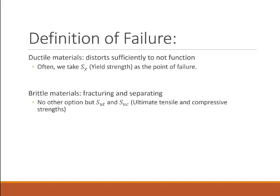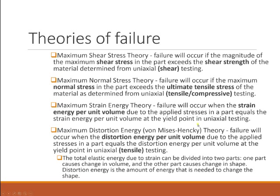There are lots of theories of failure that people have proposed over the years. I'm going to briefly look at four of them. The first one is the maximum shear stress theory: failure occurs when the shear stress exceeds the shear strength, and we determine the shear strength using uniaxial testing. The problem with this one is that it doesn't match the data. However, it is a conservative theory, meaning it takes more stress to fail than the theory predicts.